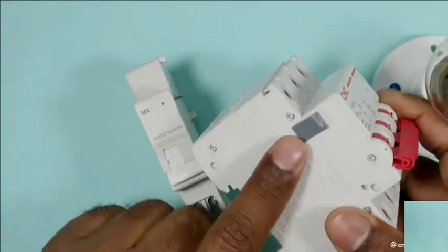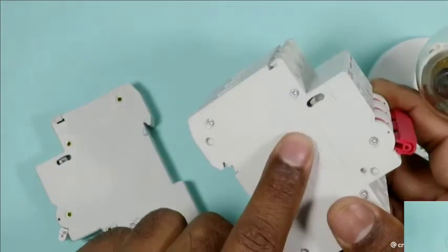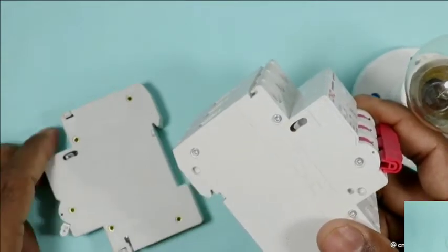At the side of MCB you will find a cover. Remove this cover. After removing cover, you have an option to mechanically interlock the coil. So I am going to mount the coil here.